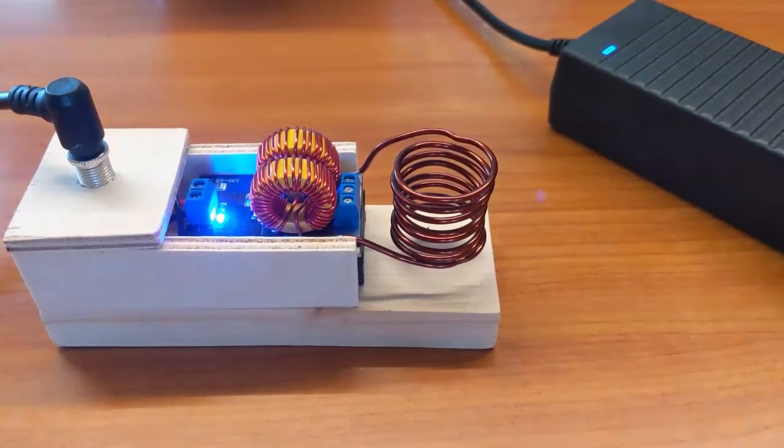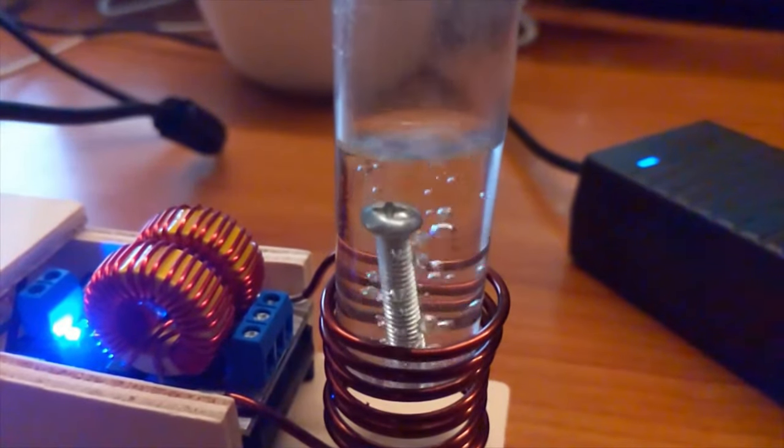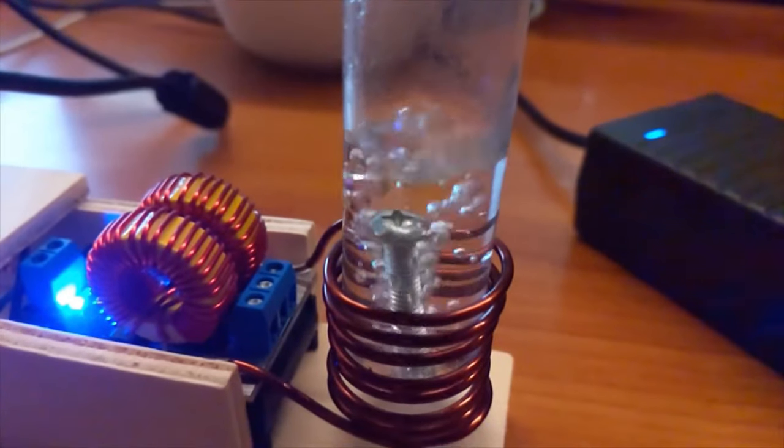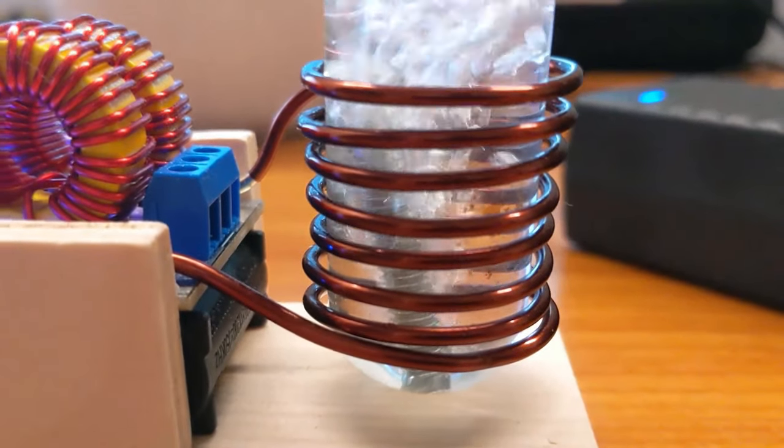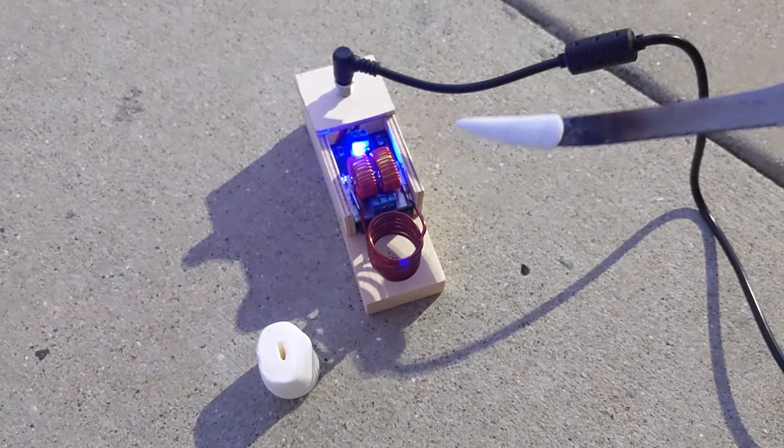Now's a good time to point out that all these materials are available in the description to this video, or on the Medium article I wrote, or on my website. But anyway, here I am boiling water with a bolt. You can see all the bubbles are coming from the bolt, and so this is telling you that the coil's not hot, and the heat is actually coming from the bolt itself, but we'll get into that in a second.